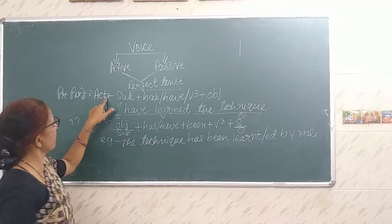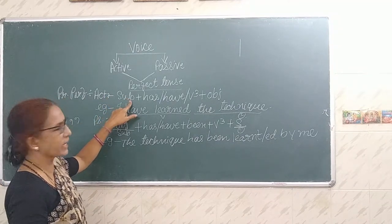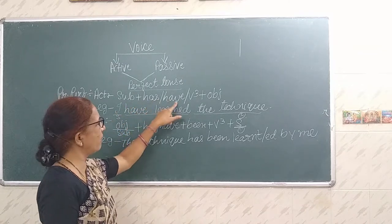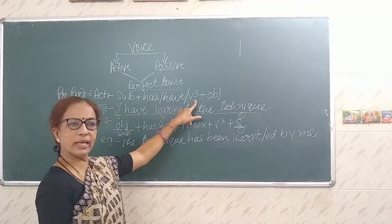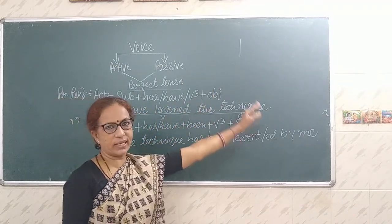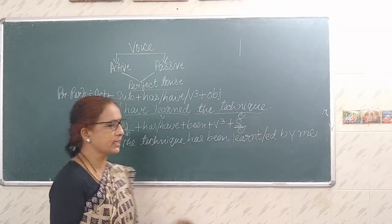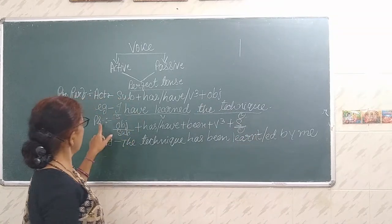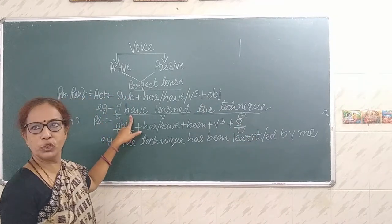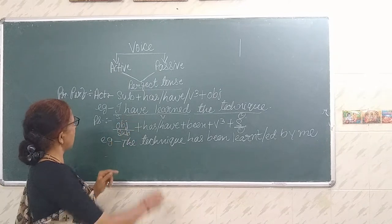In present perfect tense, how is the structure in active voice? Subject plus has or have, then V3, and the object — that is the completion of the sentence. Here I have shown you with the help of an example.